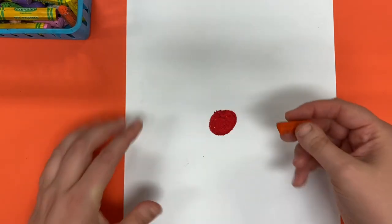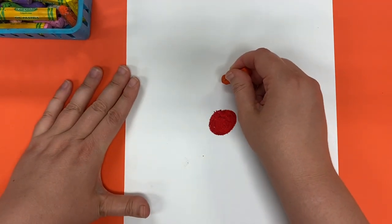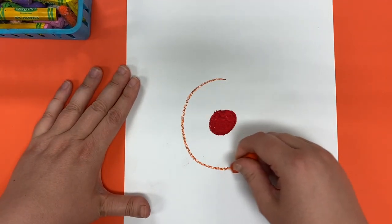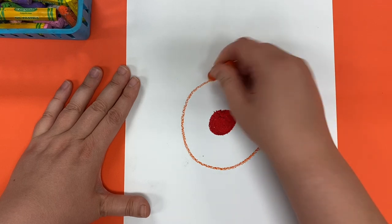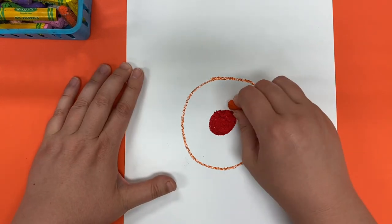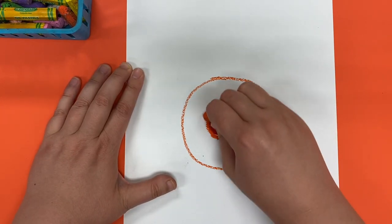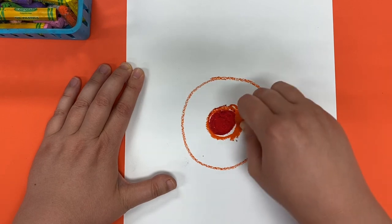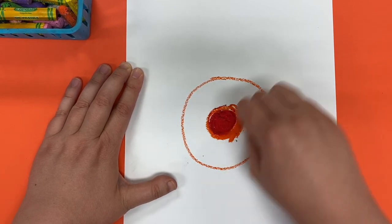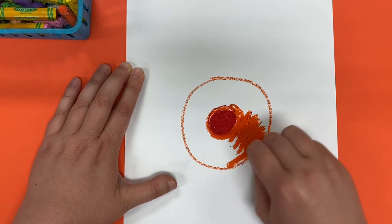So you do one color, then you're just going to draw another circle around it. It doesn't have to be perfect. And then you're going to do the same thing again. You are going to color in that whole ring by pressing down hard.